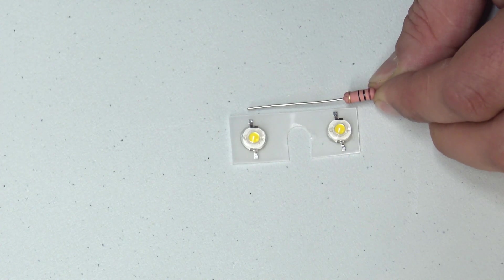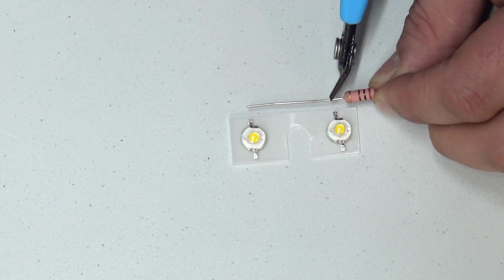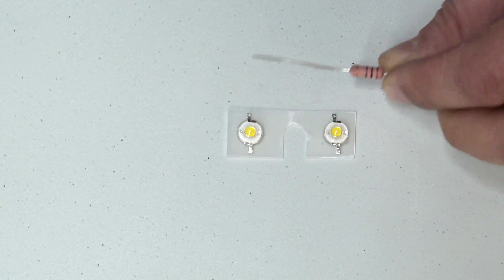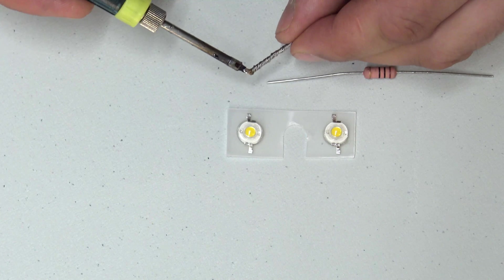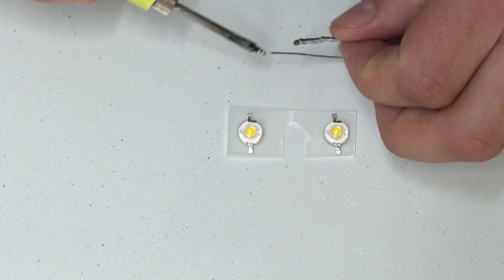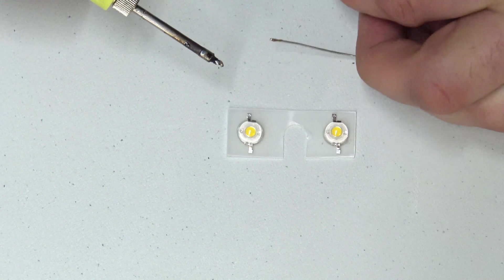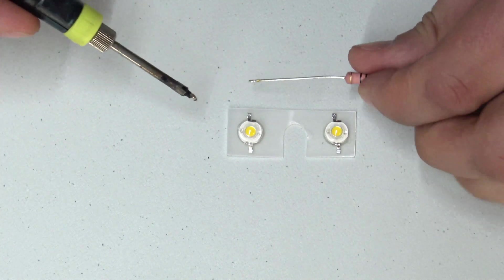And then what we're going to do is using a lead, chopping a lead from the resistor that's supplied, start to wire up these LEDs in parallel. So this is reasonably easy. Again, it's just sort of basic soldering skills really. Nothing too involved there.